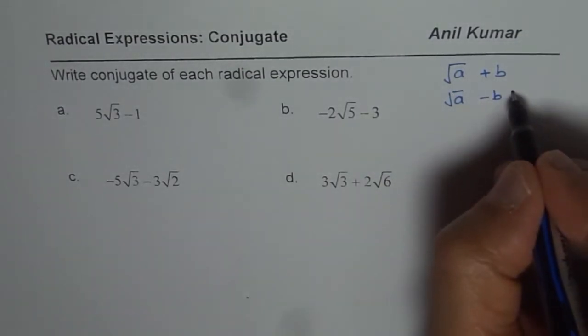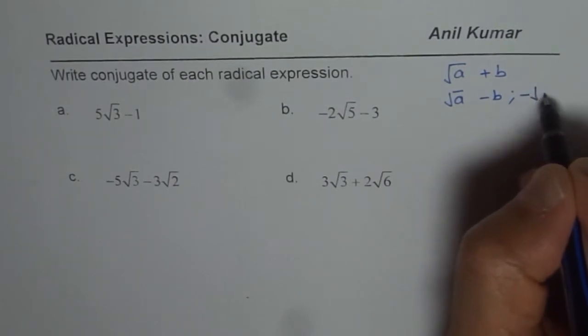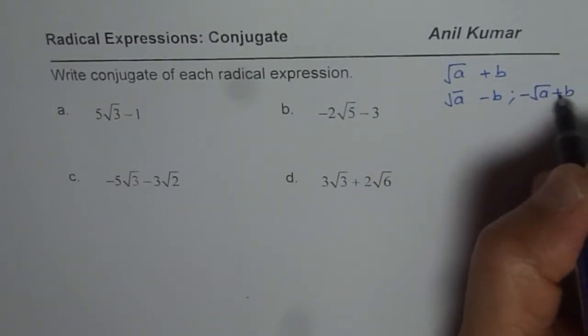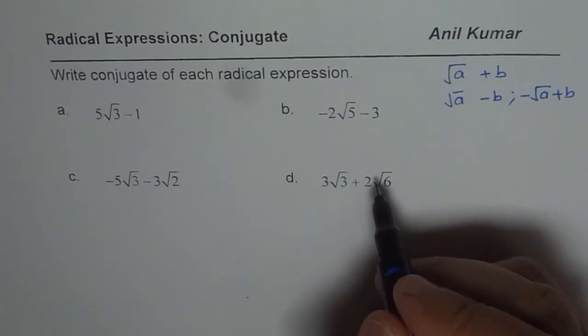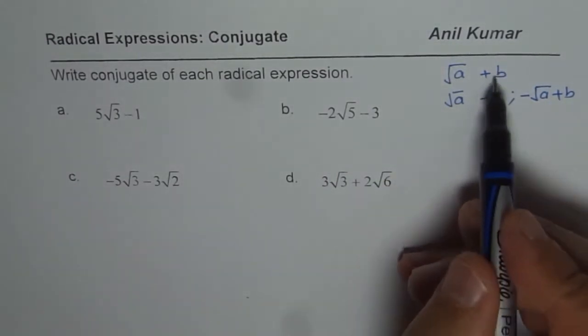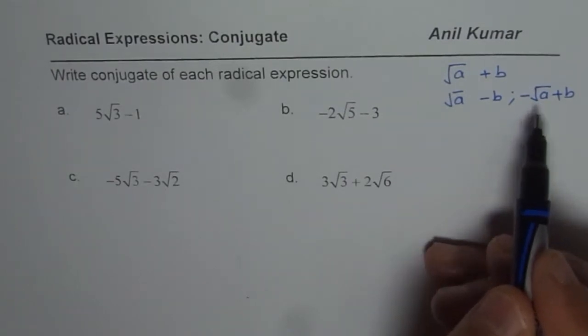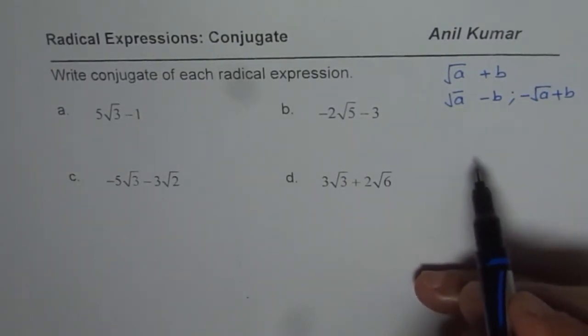Well, I could also write -√a + b as the conjugate. Both are conjugates, since if I multiply them I will get rid of the square root part and we call that as rationalization.